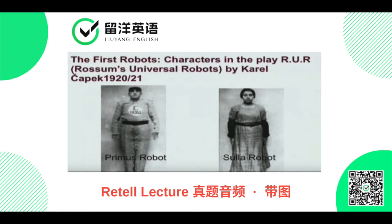Interestingly, these robots, being human, are actually assembled in the play on a production line — a bit like the Ford manufacturing production line. So even though they are human, they are assembled, and these robots are designed to labour. That is their primary purpose in society.